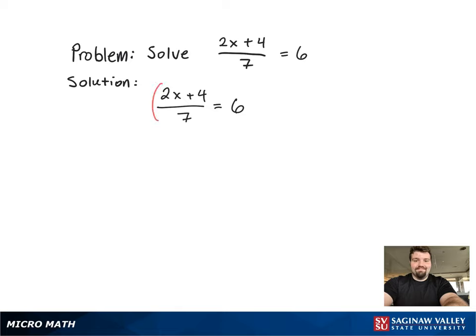Since the equation has a fraction in it, we're going to multiply both sides of the equation by the LCD, which in this case happens to be 7. As you can see, there are no more fractions in the equation now.